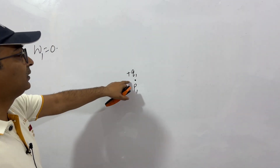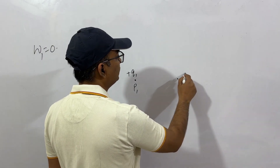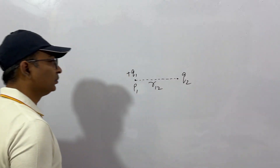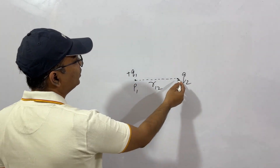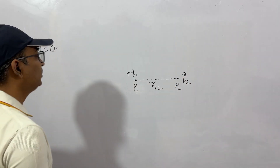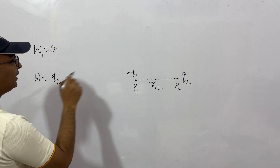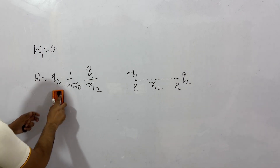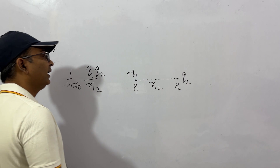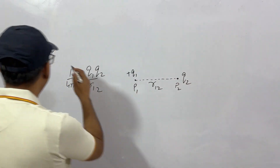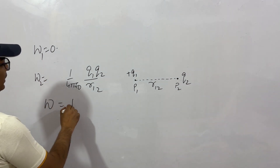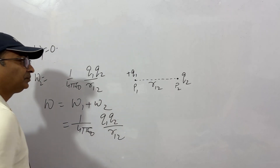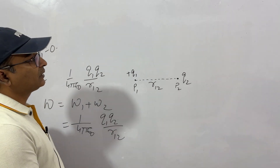Now let's bring another charge q2 from infinity to this point. What will be the work done? We need to know the distance between them — let this be r12. Now we have an electric field because of q1, so the work done in bringing q2 from infinity to point P2 will be q times V. V at this point is 1 by 4 pi epsilon_0 times q1 by r12, giving us q1 q2 over r12. The net potential energy of this system will be W1 plus W2, which is 0 plus this term.